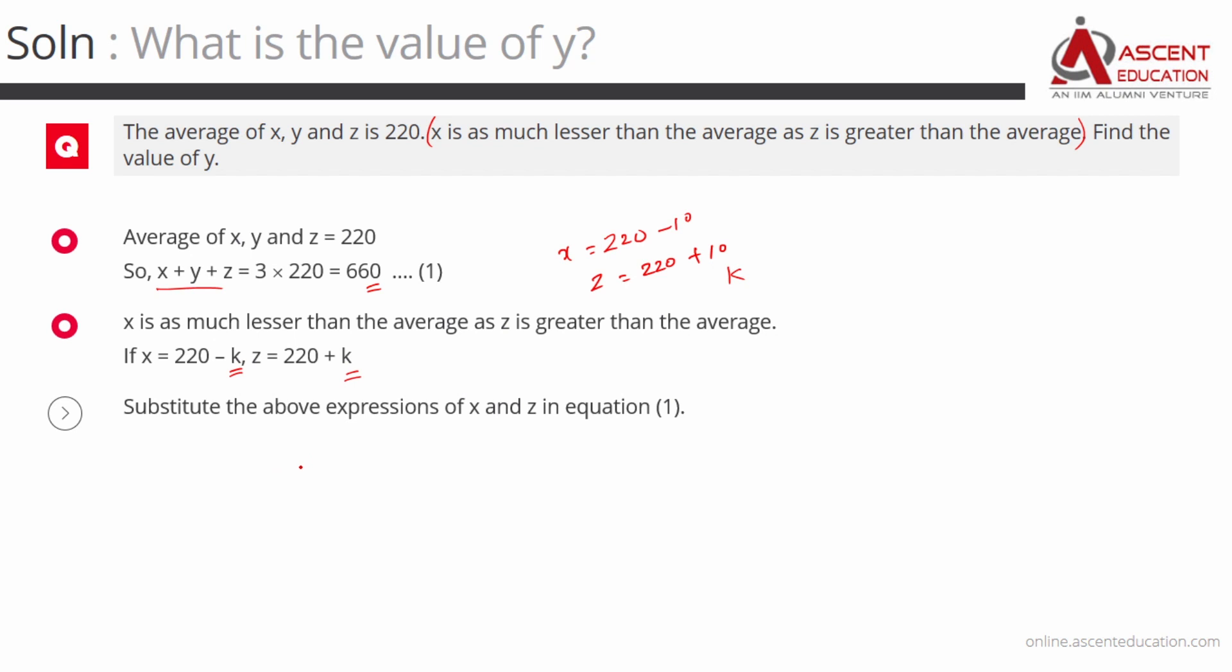So x is equal to 220 minus k, z is equal to 220 plus k, plus y. So x plus y plus z is equal to 660. The k gets cancelled with this k. So y is equal to, the 220 plus 220, 440 goes to the right hand side. The value of y is 220.